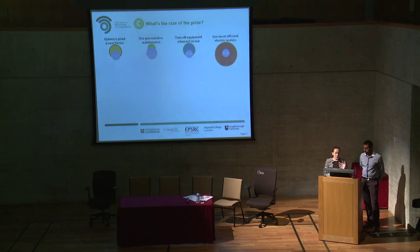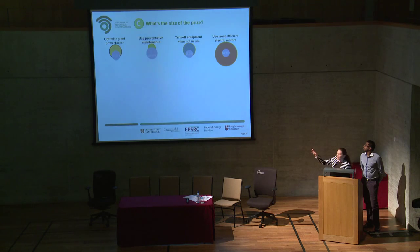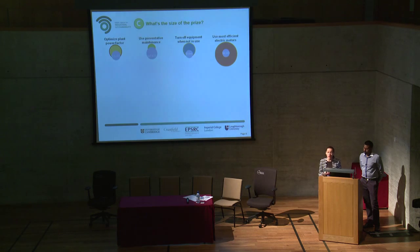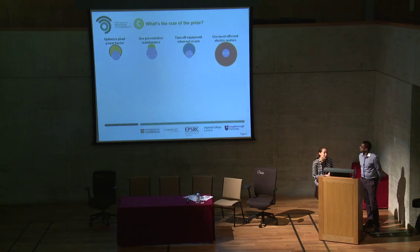Now we've been talking about examples of practices and what companies have done, and that brings us to element C — what's the size of the prize. At the top here are examples of practices, how often they've been implemented, and what you can actually save. I'll let Anand explain a little bit more about the quantitative assessment of how much we can save.